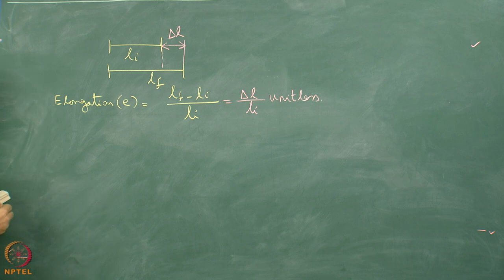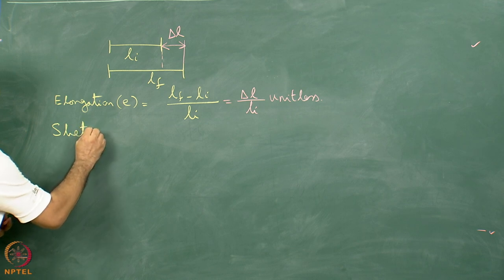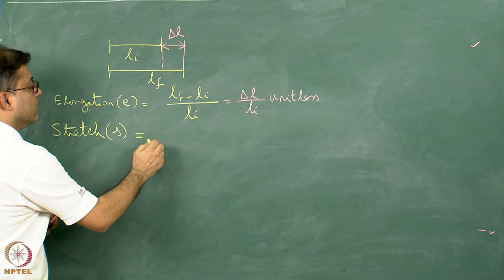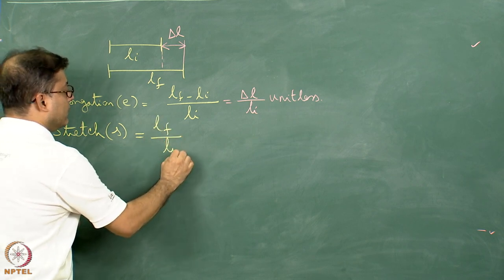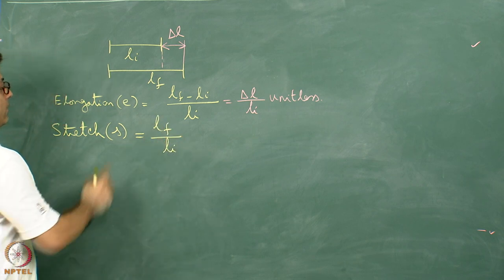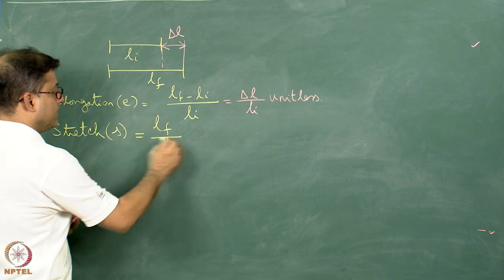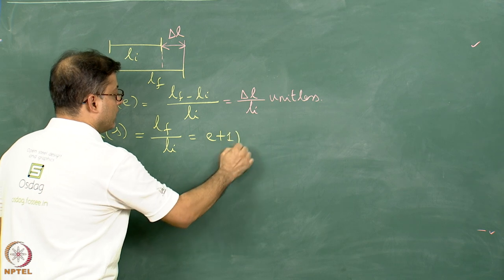The second parameter is stretch, small s, defined as L final divided by L initial. From the definition of elongation, we can write s equals E plus 1. Since E has no unit, s equals E plus 1 also has no unit.